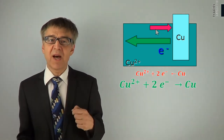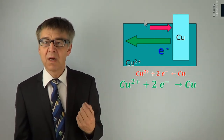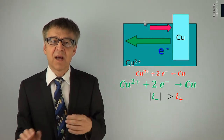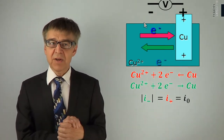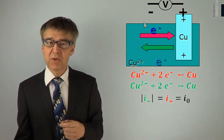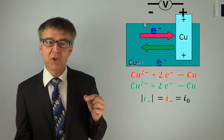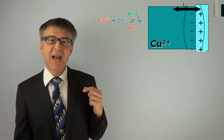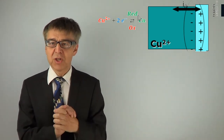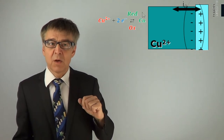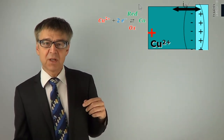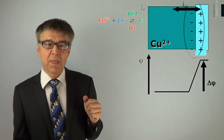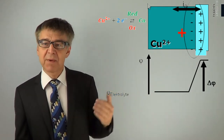Initially, the electrode was polarized cathodically: the cathodic current density was greater than the anodic current density. At equilibrium, anodic and cathodic current density are equal in magnitude and correspond to the so-called exchange current density. An electrode is thus characterized by a so-called electrochemical double layer, similar in structure to a plate capacitor. When we move a positive test charge from the electrolyte into the metal and record its energy, we get a potential diagram with a potential jump due to the electrochemical double layer.